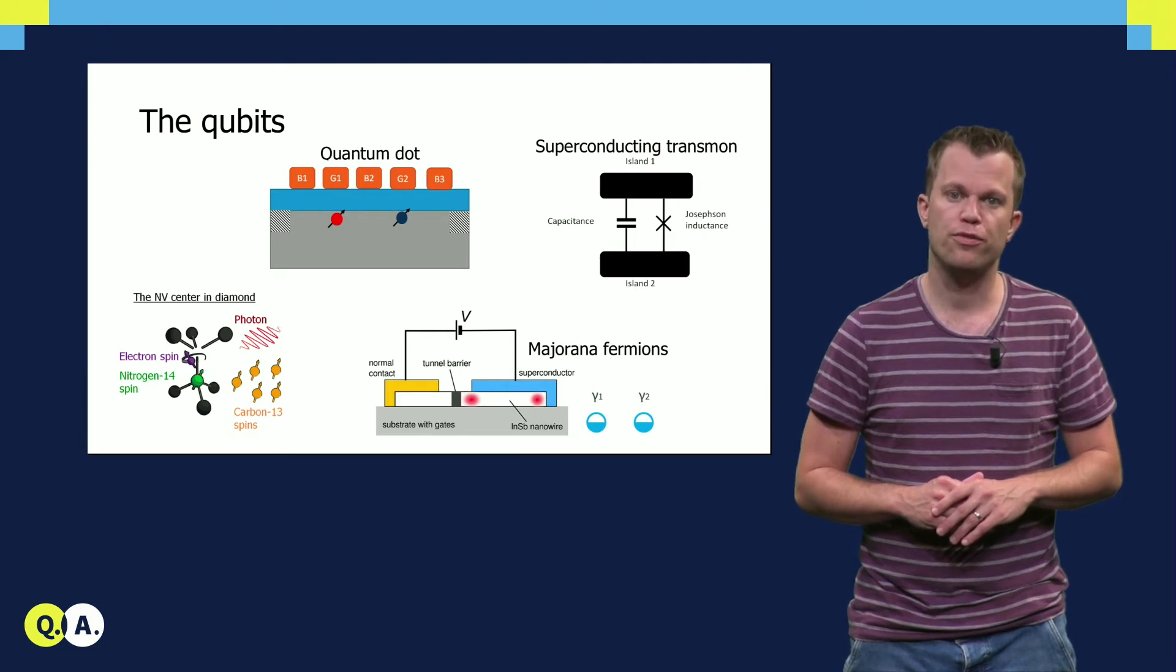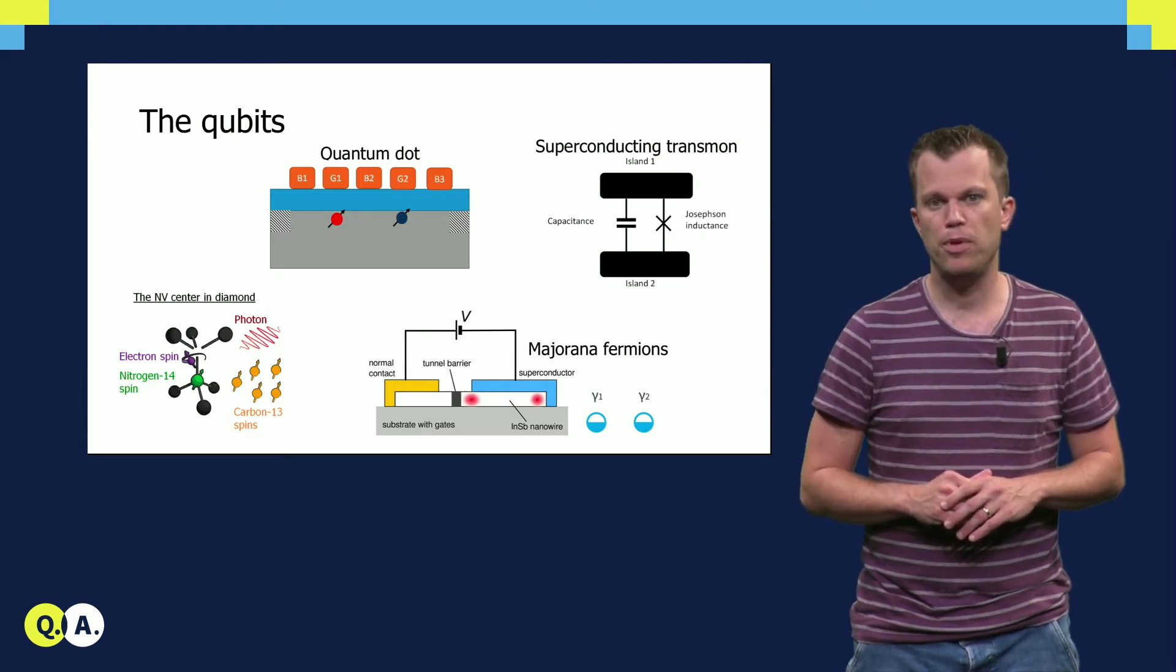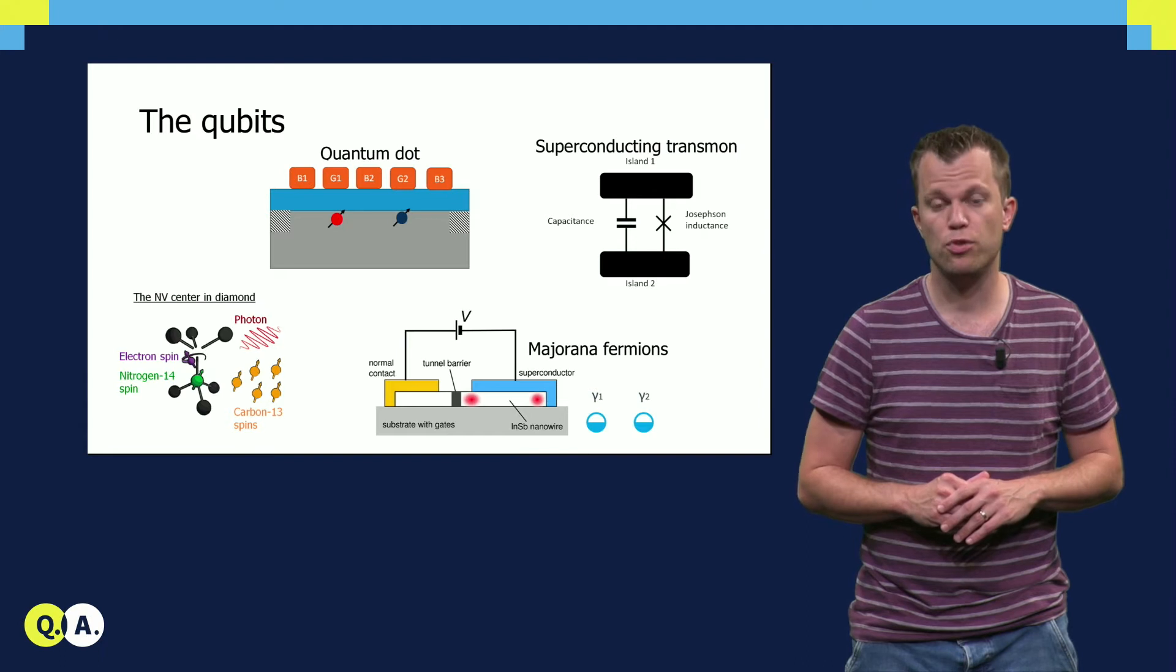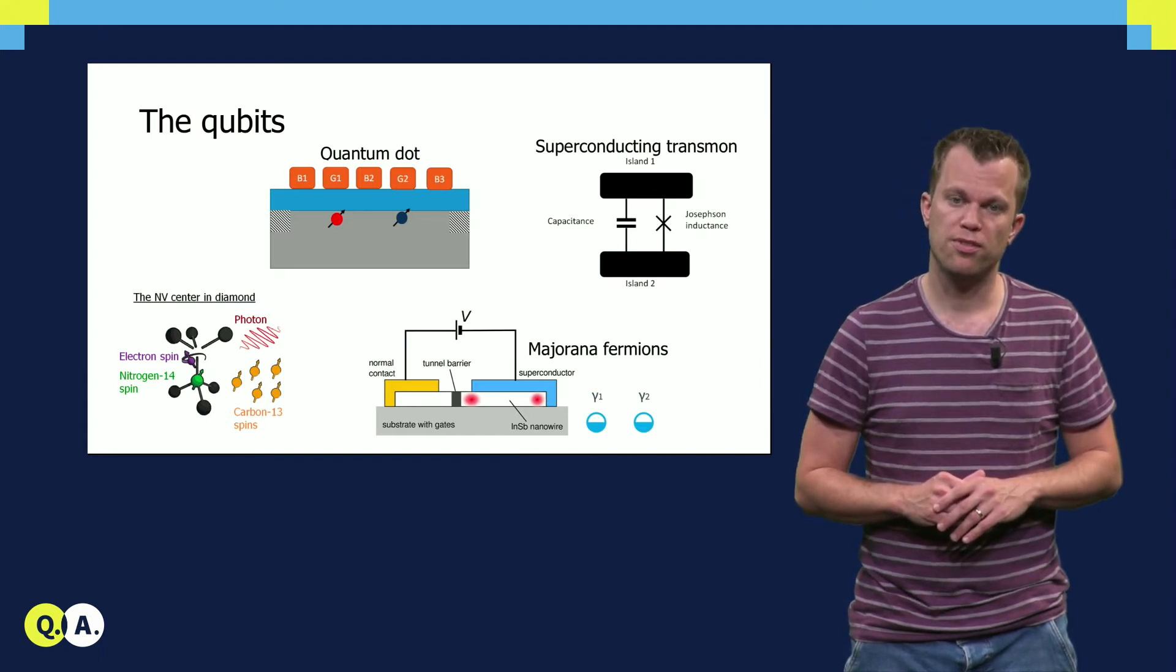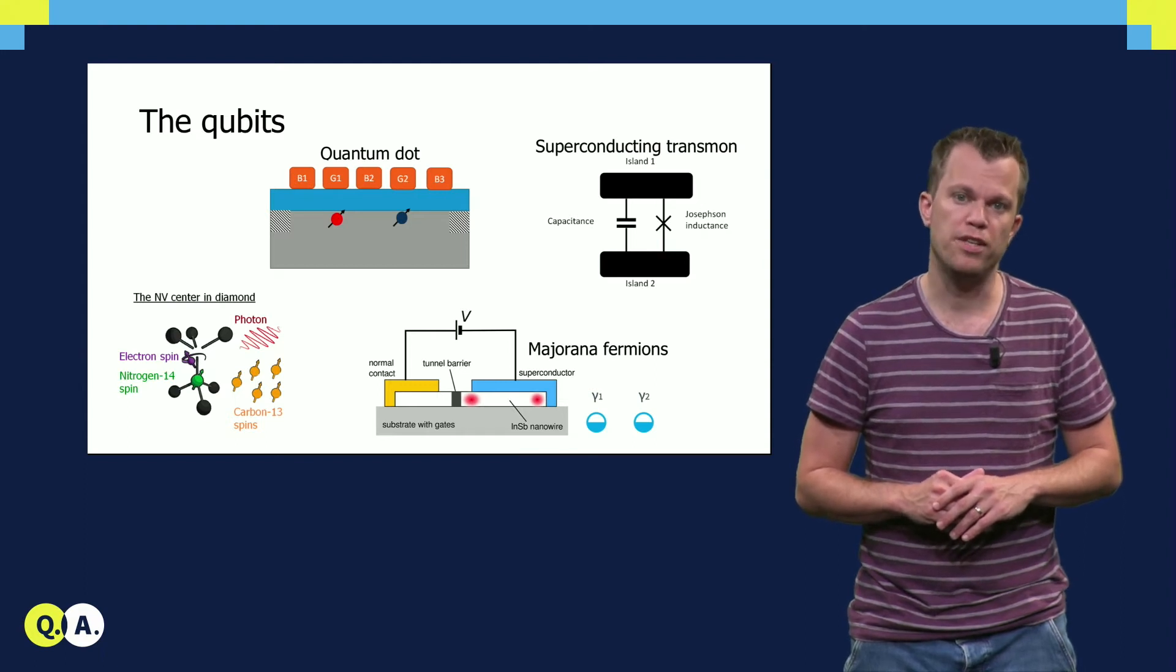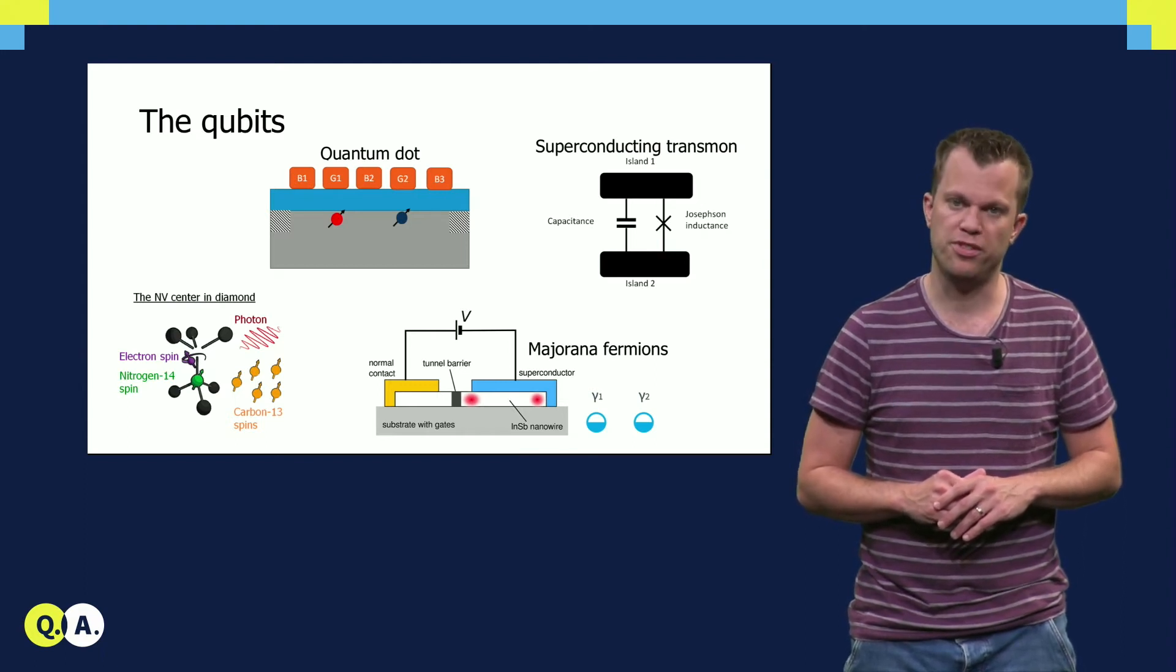A special class of qubits exists that can be made intrinsically insensitive to some noise. These are called topological qubits, and are qubits such as the ones based on emergent Majorana-Fermion states.